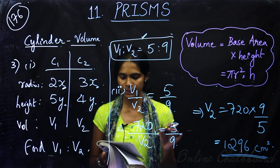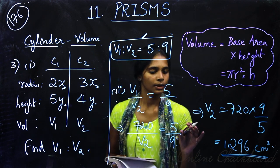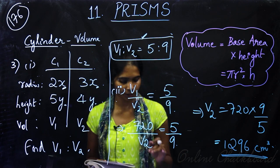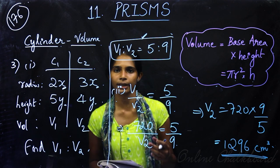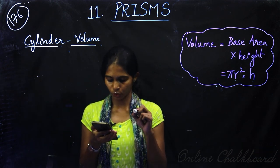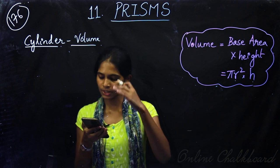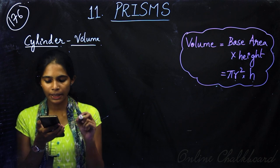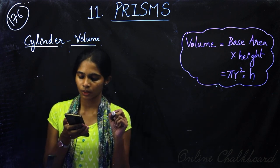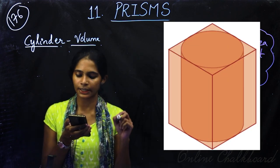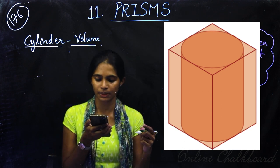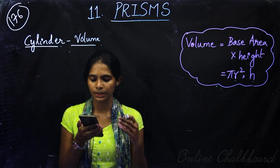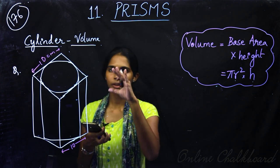Now we will do the next question from the exercise. A block of wood is a square prism with a square side of 10 centimetres and height of 20 centimetres. What is the volume of the largest cylinder that can be carved out of this?